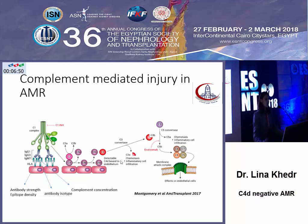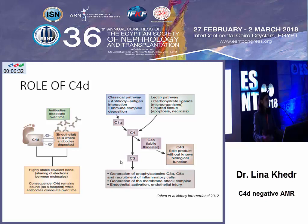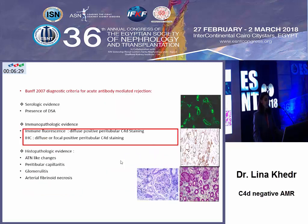For example, IgG1 and IgG3 have a higher ability to fix C1 complex. So where does the C4D come from? The problem actually comes from the cleavage of C4B into a smaller molecule of C4C and C4D. C4D is biologically inactive. It binds covalently to endothelium cells, leading to us calling it the footprint of antibody-mediated rejection. This led Banff in 2003 and 2007 to include it as an essential criterion for diagnosis of antibody-mediated rejection.